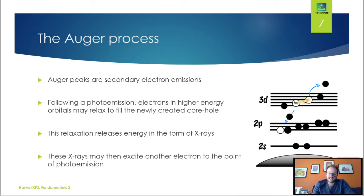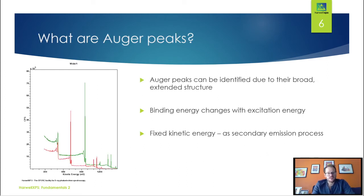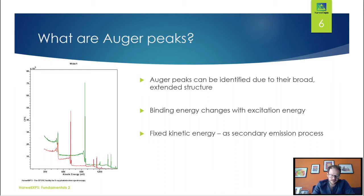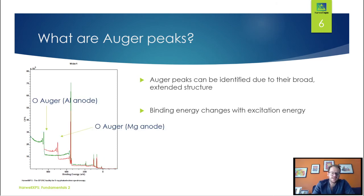This is why, when we switch our x-axis to kinetic energy, the Auger peaks overlap regardless of excitation energy, while the core line peaks shift. Conversely, when we go back to binding energy, we see the Auger peaks move while the core levels remain the same.